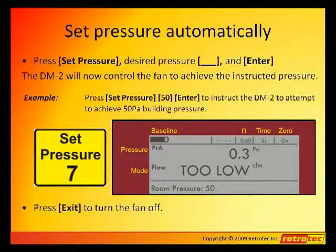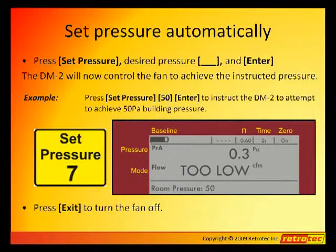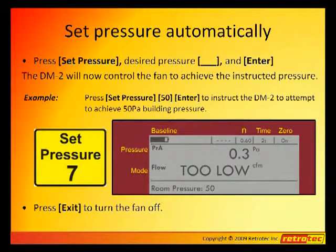The room pressure can be set using the gauge by simply pressing Set Pressure, then the desired pressure difference, followed by the Enter key. This activates the Jog feature, which can then be used for Set Pressure adjustments.